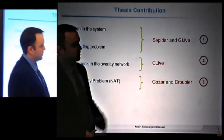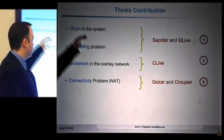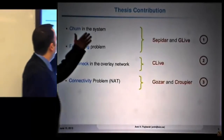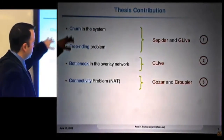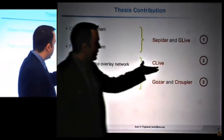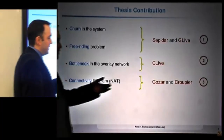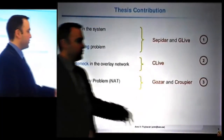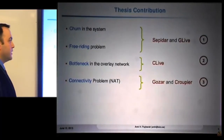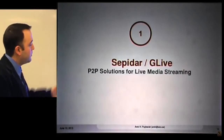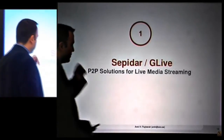These challenges formed my three main contributions. I designed and implemented algorithms and systems to answer these questions. I've presented Cepidar and Jelive, which answer the churn and free-rider challenges. Later, I present Clive, which addresses the bottleneck in the overlay, and also Gozar and Kruppier, two systems to solve the connectivity problem. Now I'll go through the first contribution — Cepidar and Jelive, a peer-to-peer solution for live streaming. In this presentation, I only present Cepidar.